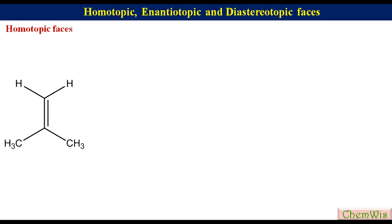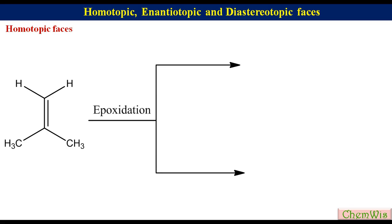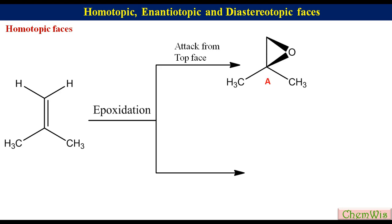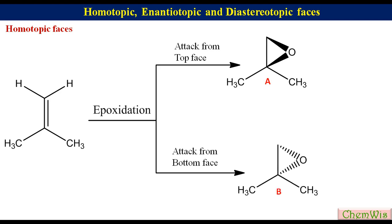In the case of alkenes, always use epoxidation reaction as a test reaction for the determination of topicity. Epoxidation of 2-methylpropene from the top face gives structure A, while from the bottom face gives structure B. Since structures A and B are the same, the two faces of the double bond of 2-methylpropene are homotopic.